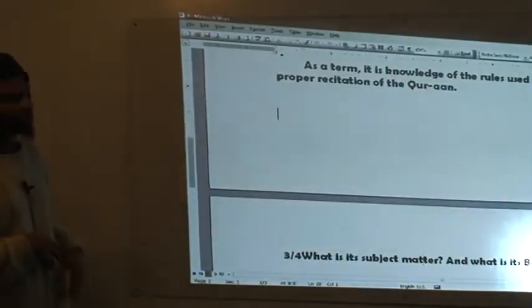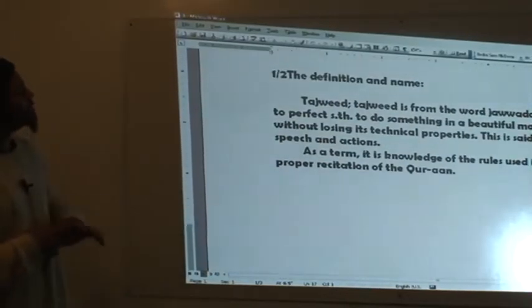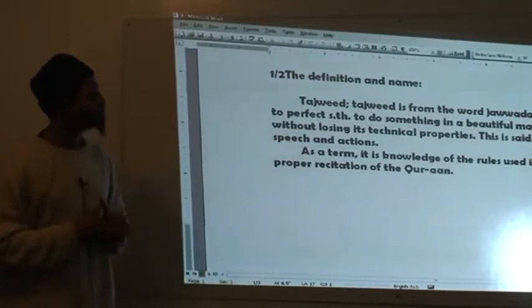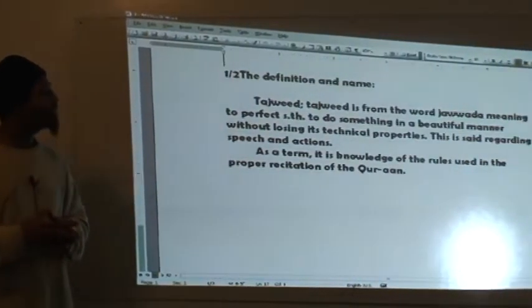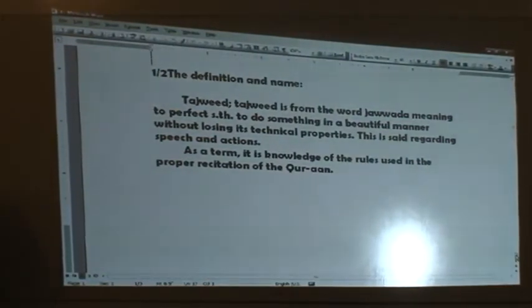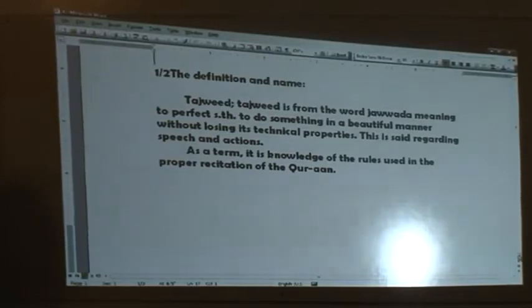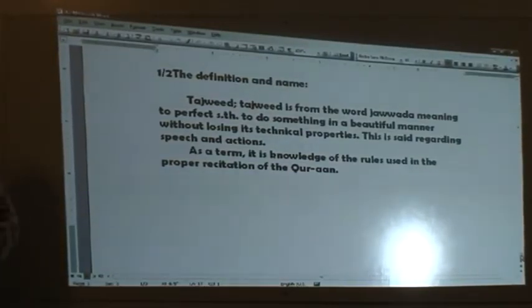The first and second is the definition and name. Tajweed is the name. Tajweed is from the word Jawada, meaning to perfect something, to do something in a beautiful manner without losing its technical properties. First, this is said regarding speech and actions. This is the linguistic meaning.